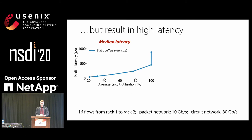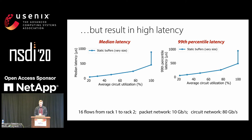To demonstrate this, we looked at average circuit utilization for various static top-of-rack queue sizes. As expected, we get higher utilization — but as you'd also expect, the downside is an increase in latency. Plotting average circuit utilization on the x-axis and corresponding latency on the y-axis, both median and 99th percentile latency increase quite substantially.